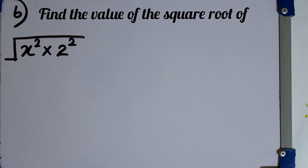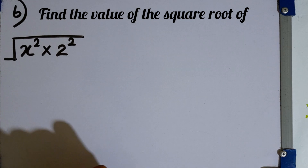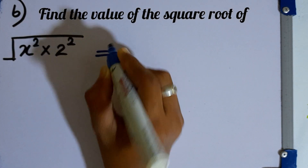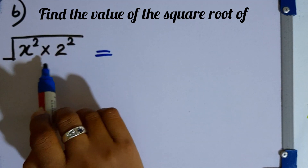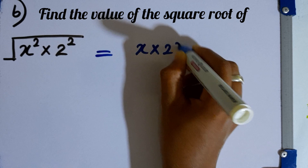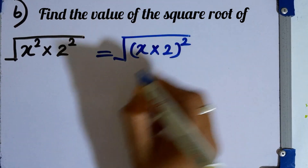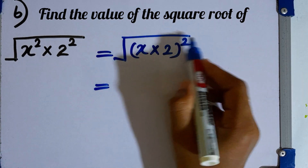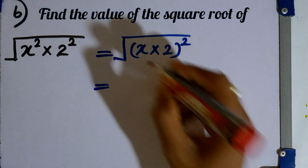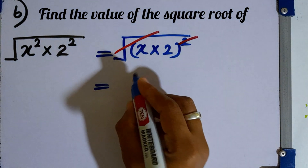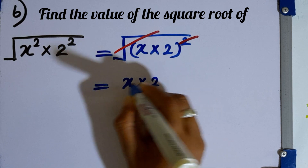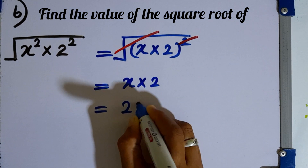Question number 6. Find the value of the square root of x squared times 2 squared. We write the product of squares as the square of a product: the square root of (x times 2) squared. The square root and square cancel as opposite operations, leaving x times 2 inside the bracket, which equals 2x. That is the final answer.